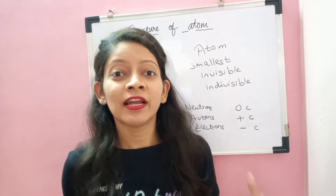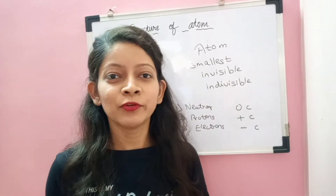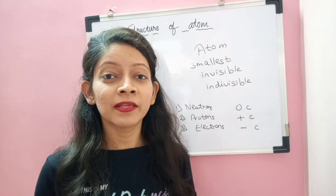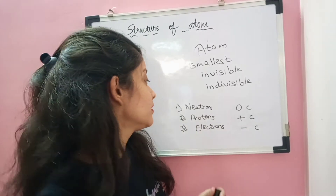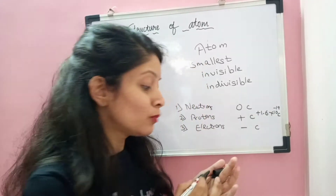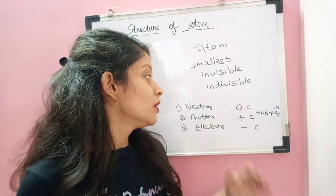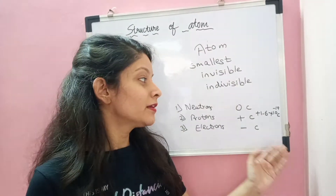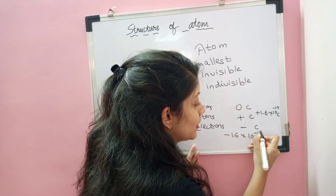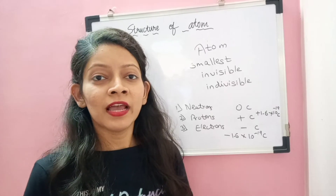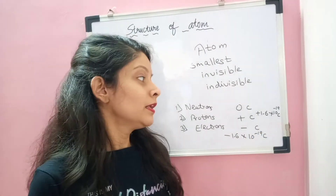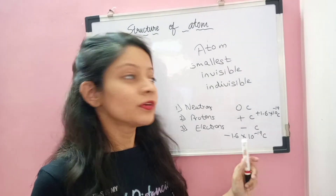Just as each quantity has an SI unit — for example, time has seconds and mass has kg — similarly, protons and electrons also have a specific SI unit for charge. Protons have a charge of plus 1.6 × 10⁻¹⁹ Coulombs, and electrons have a charge of minus 1.6 × 10⁻¹⁹ Coulombs. For neutrons there is no charge, as they have neutral charge.